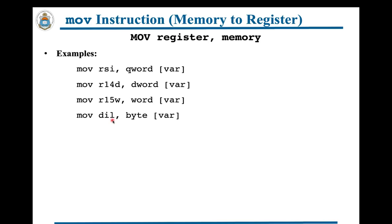Similarly, here are sample MOV instructions that read the contents of memory and move them to a register. Once again, note the size specifier with the source memory operand this time.